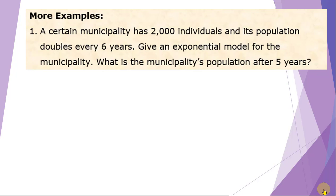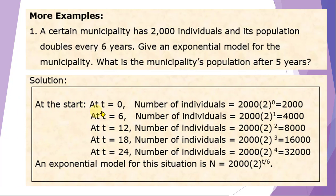More examples: Example one — a certain municipality has 2,000 individuals and its population doubles every six years. Give an exponential model and find the population after five years. At t equals 0: 2,000; t equals 6: 4,000; t equals 12: 8,000; t equals 18: 16,000. The exponential model is: N equals 2,000 times (2) raised to t over 6, because it doubles every six years.